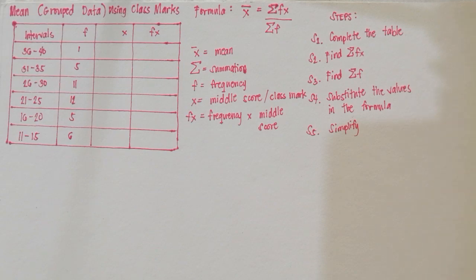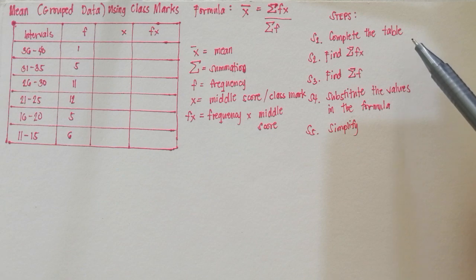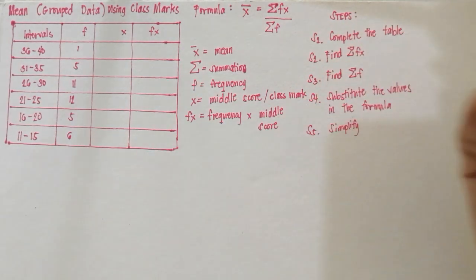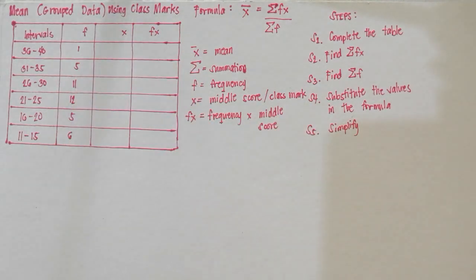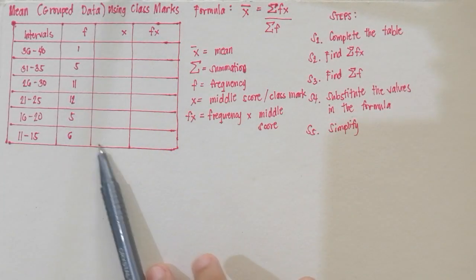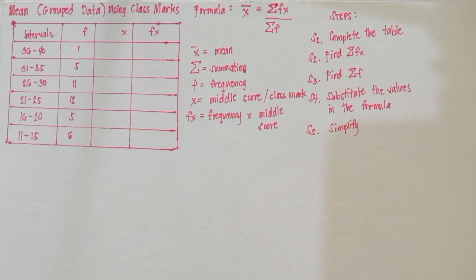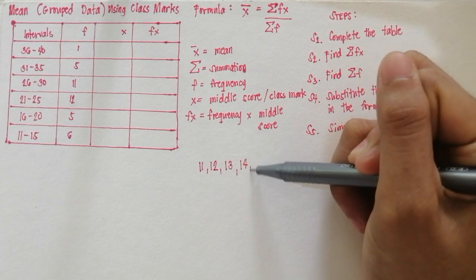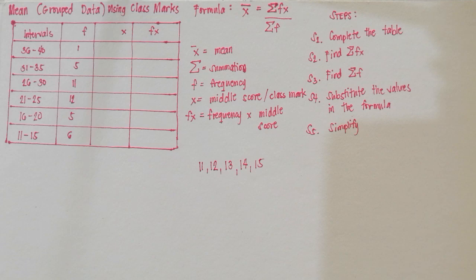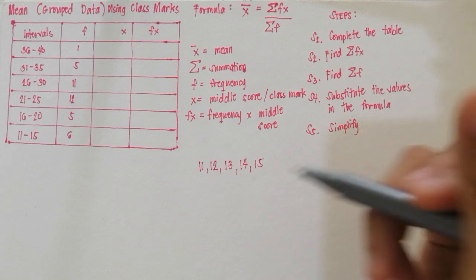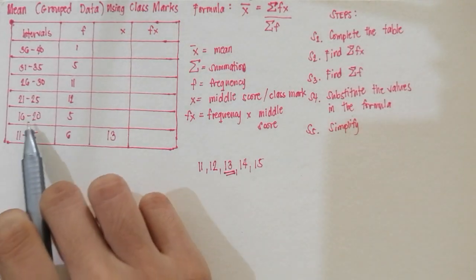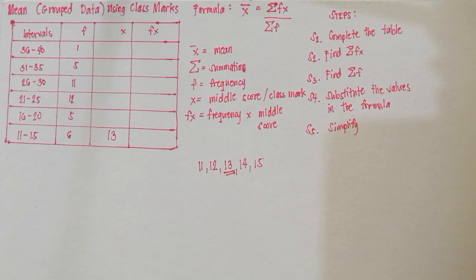I have prepared 5 simple steps as a guide in solving for the mean of grouped data. Step 1 is to complete the table — we need to find the values for X and FX. Starting at the bottom, the interval 11 to 15 has numbers 11, 12, 13, 14, and 15, so the middle score is clearly 13. For 16 to 20, the middle score is 18.